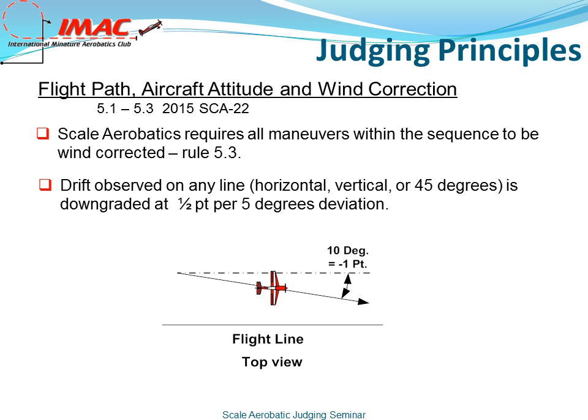Drift observed on any line — horizontal, vertical, or 45 degrees — is downgraded at half a point per 5 degrees deviation. In the illustration below, 10 degrees would result in a one-point deduction.